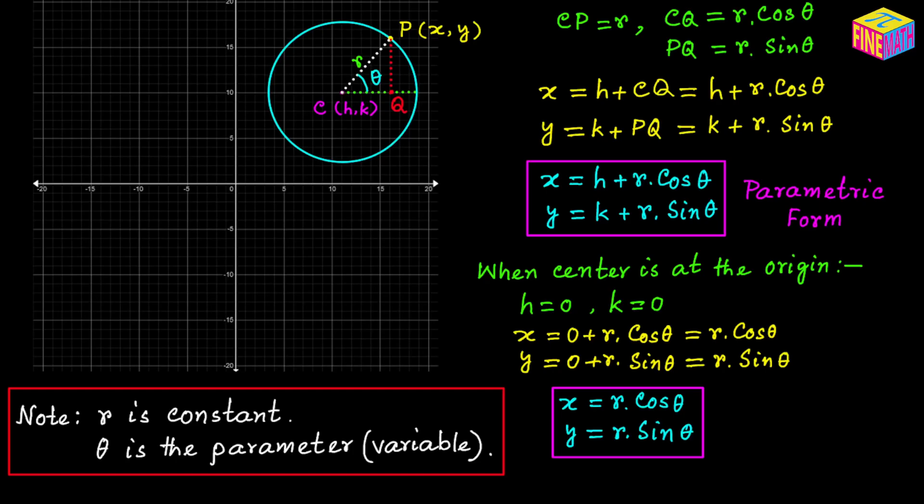Now if you think the other way — if R is variable and theta is constant — this will actually become the parametric form of equation of a straight line. You have to make this point very clear: when R is constant and theta is variable it represents a circle, but when theta is constant and R is variable then it will represent a straight line. I have already created a separate video on that — I have provided the link in the description. Feel free to watch that video, where I derived the parametric equation of straight line using the similar concept where R is a variable and theta is a constant.